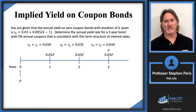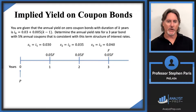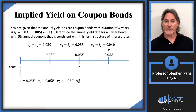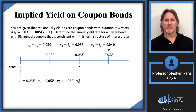On the one hand, I could price this bond using the term structure of interest rates. I would discount the payment at time one — the 0.05F payment — from time one back to time zero by multiplying by V sub 1. The payment at time two I multiply by V sub 2 squared. Then the payment at time three, grouping it as 1.05F, I discount from time three back to time zero by multiplying by V sub 3 cubed.